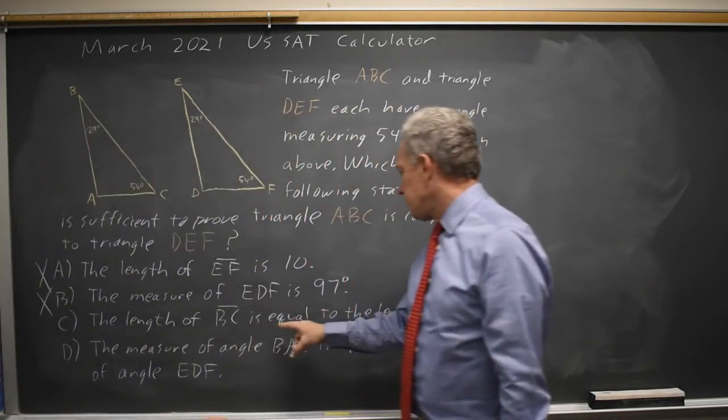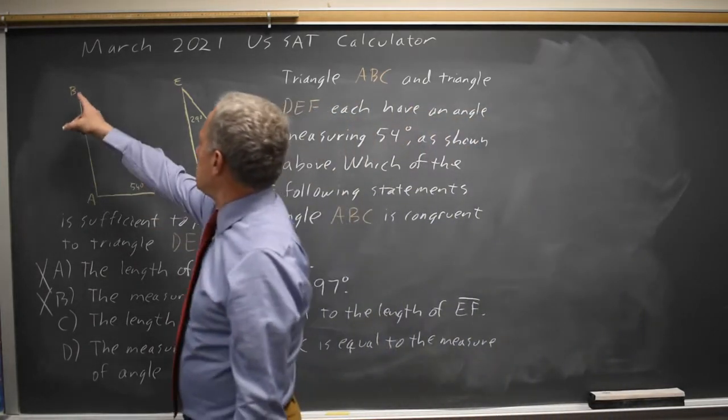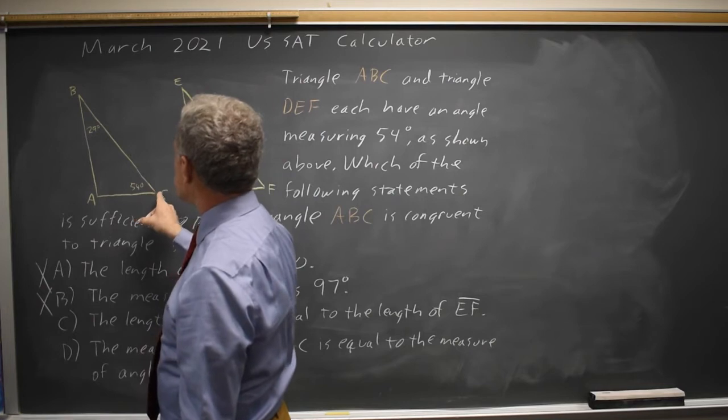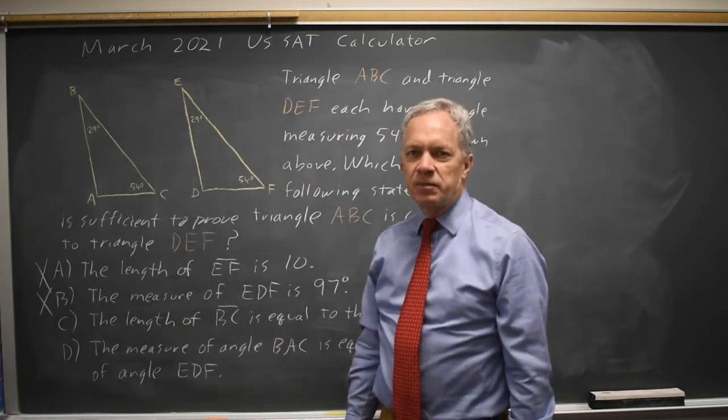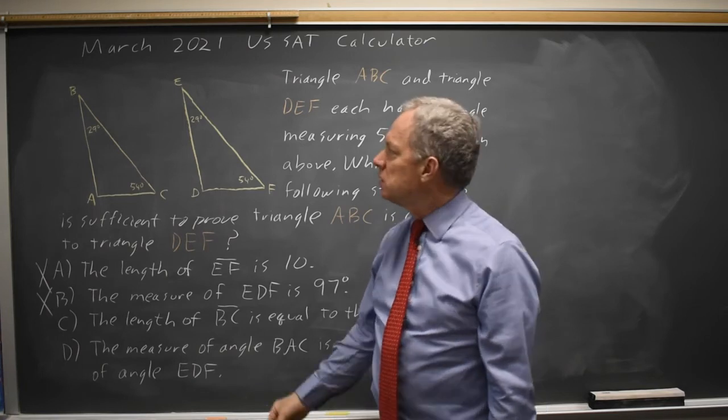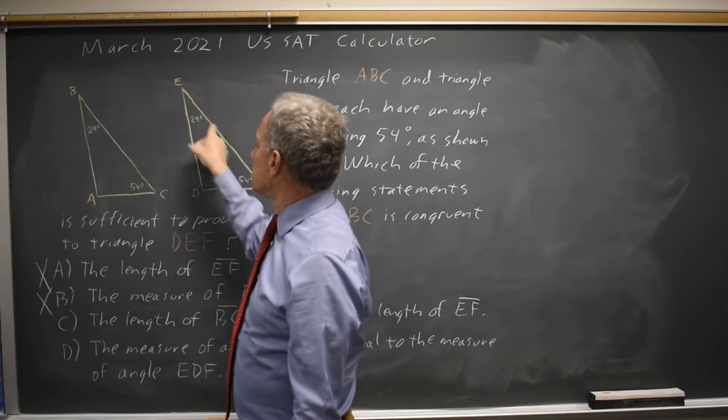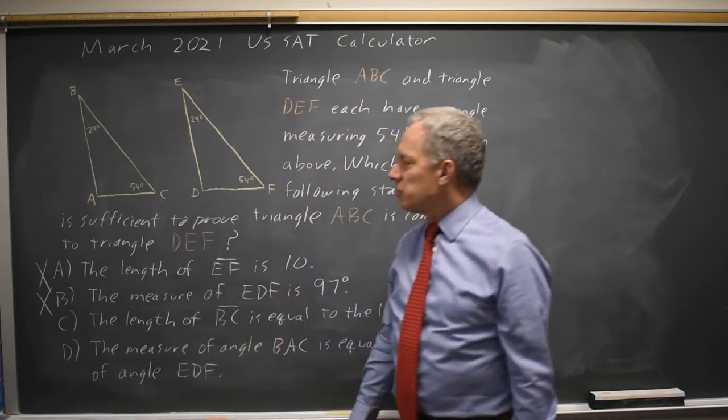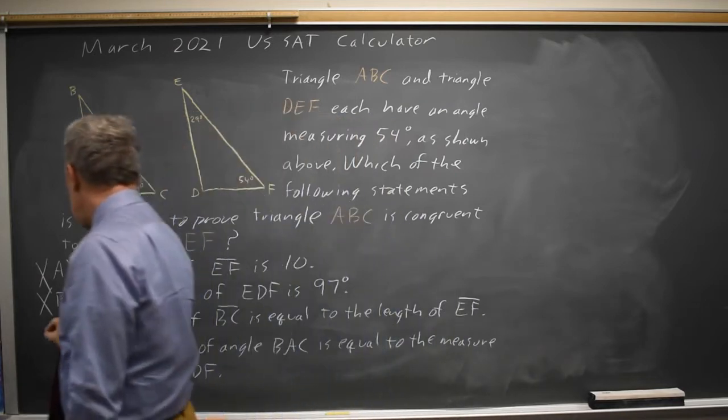Choice C, the length of BC is equal to the length of EF. BC is the side opposite of the largest angle. EF is the side opposite of the largest angle. If those two are equal, we have angle-side-angle being equal for the two triangles. And that is enough to prove congruence. So choice C is the correct answer.